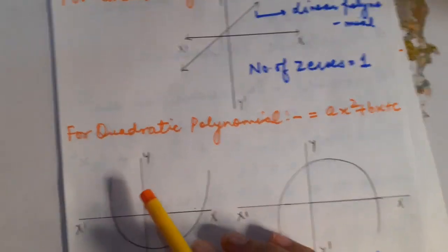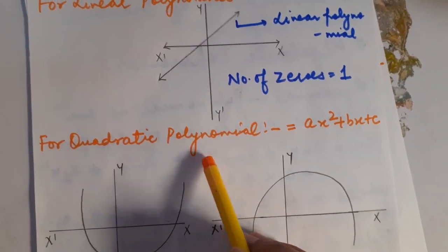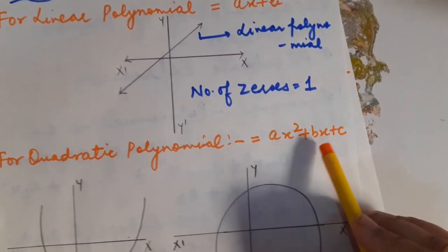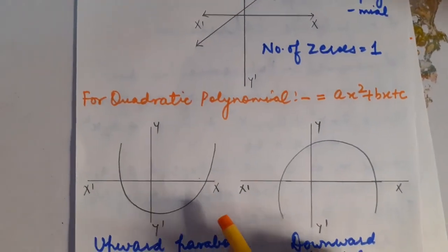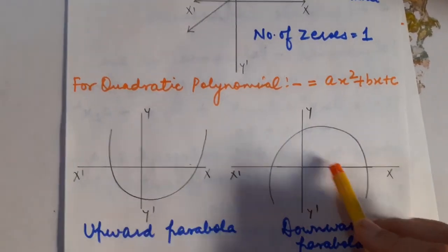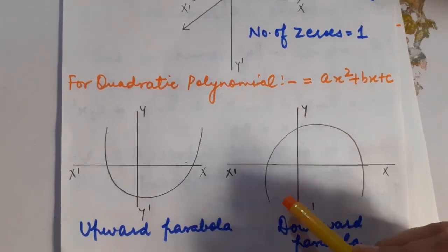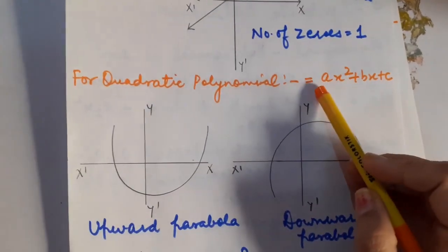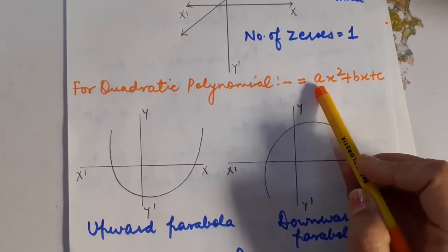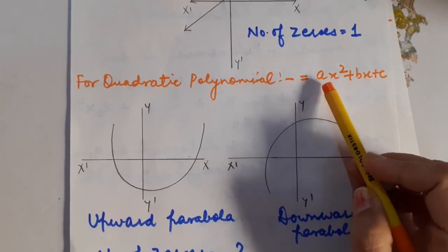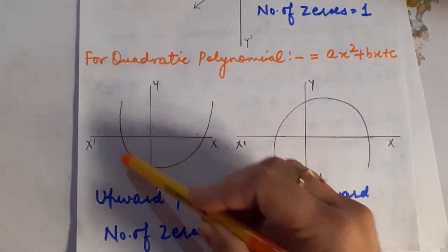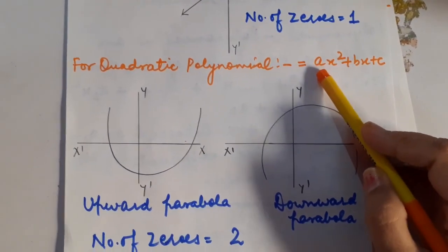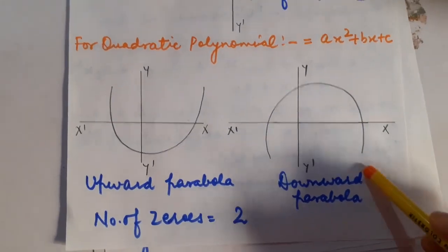Let us switch to the quadratic polynomial. The generalized form of a quadratic polynomial is ax² + bx + c, and the graph of the quadratic polynomial will be a parabola — either opened from upward or downward. If a, which is the numerical coefficient of x², is greater than 0, then an upward parabola will be formed. But if a is less than 0, then a downward parabola will be formed.